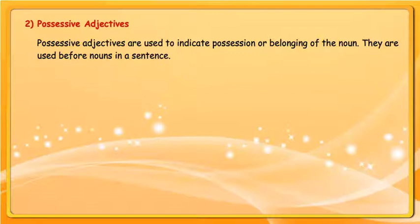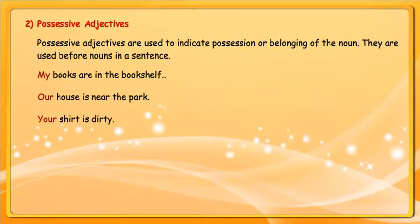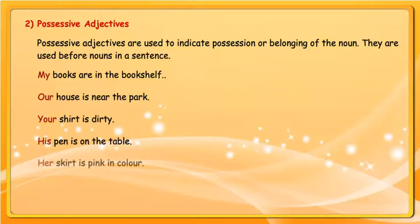Possessive adjectives are used to indicate possession or belonging of the noun. They are used before nouns in a sentence. Examples: My books are in the bookshelf. Our house is near the park. Your shirt is dirty. His pen is on the table. Her skirt is pink in color.